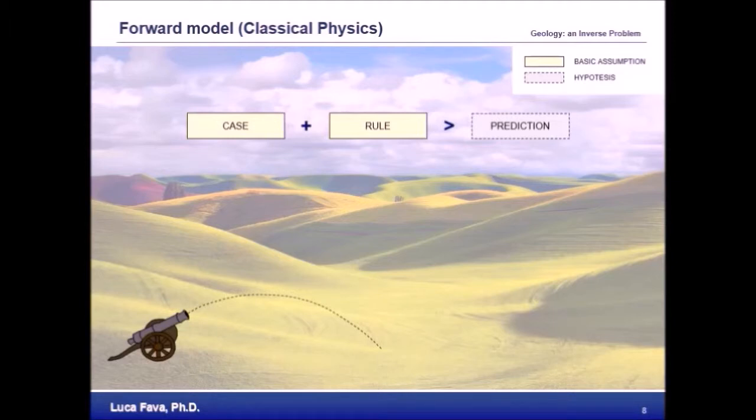This is what we can call a forward model. The next step is to run an experiment and compare the result of such an experiment with our prediction. In the example we will shoot the bullet and we will check where it will actually hit the ground. If the actual result confirms our prediction, then the rule is corroborated.